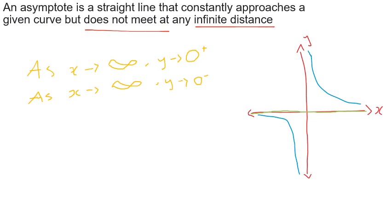Our next type of asymptote is the vertical asymptote. This is where x approaches zero from either direction and the magnitude of y becomes very large. Looking at the hyperbola in the bottom left, when x starts to approach zero along the y-axis, y starts to approach infinity. So we can write: as x approaches zero from the positive side, y approaches infinity, and as x approaches zero from the negative side, y approaches infinity again.